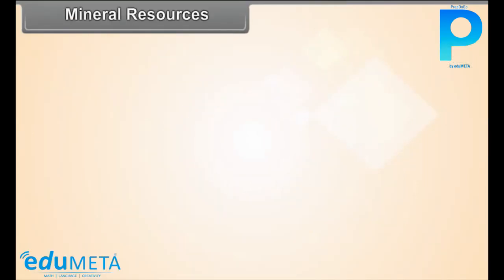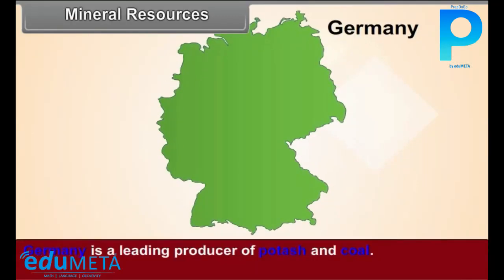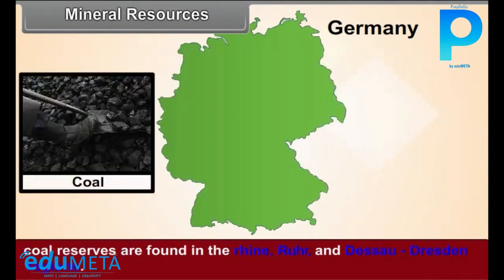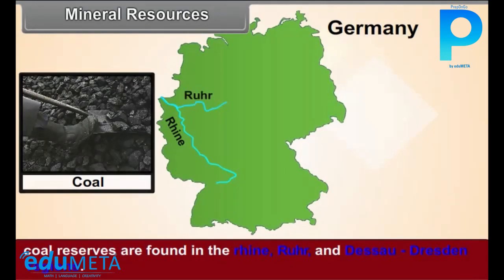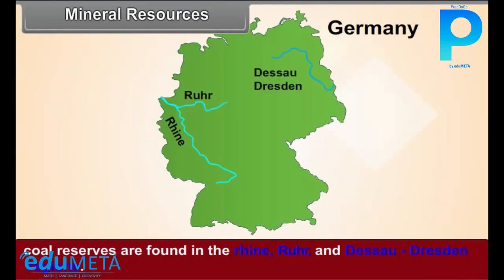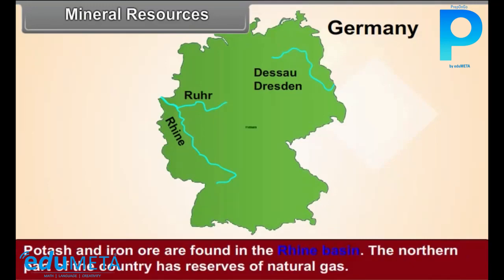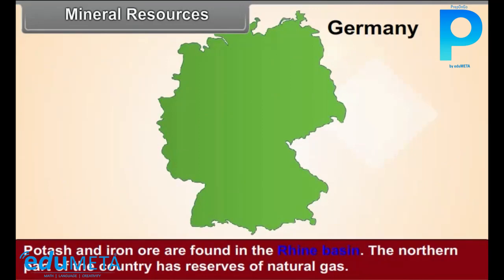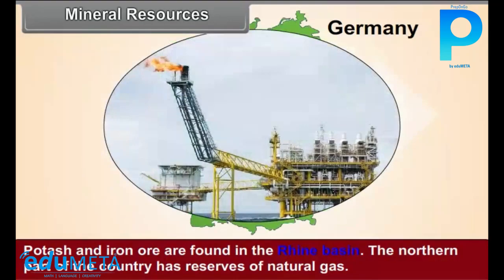Mineral Resources. Germany is a leading producer of potash and coal. Coal reserves are found in the Rhine, Ruhr, and Dessau-Dresden regions. Potash and iron ore are found in the Rhine Basin. The northern part of the country has reserves of natural gas.